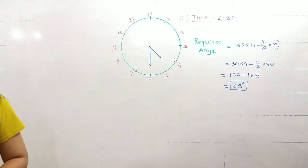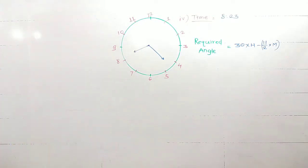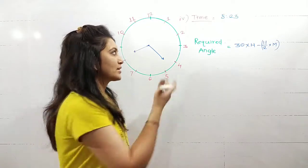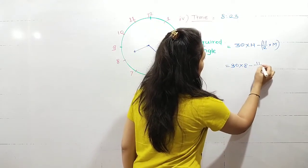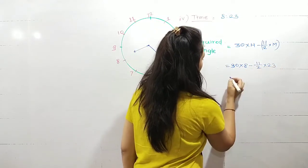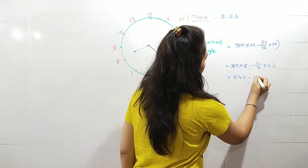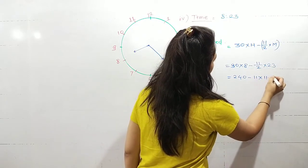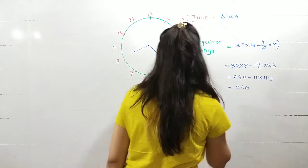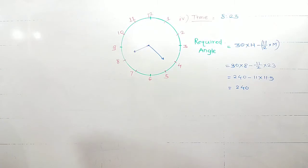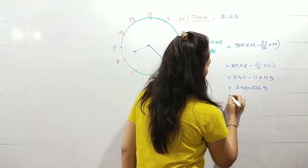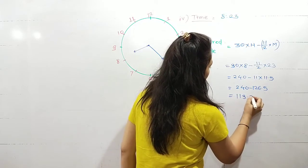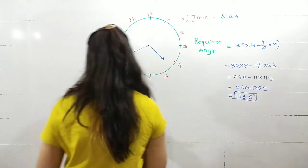Next time is 8:23. Again this one also looks very difficult to calculate, but again using this formula, let's see what answer we get. 30 into 8 minus 11 by 2 into 23, which is going to be 240 minus 11 into 11.5, which is coming out as 240 minus 126.5, which is equal to 113.5 degrees. You can check this value is again equal to the one we calculated in previous examples.